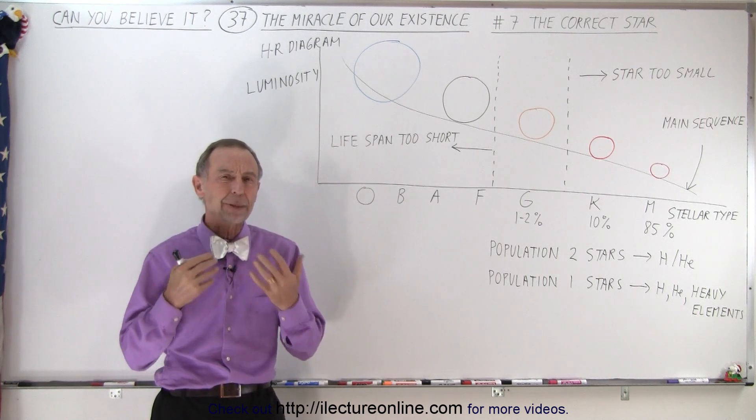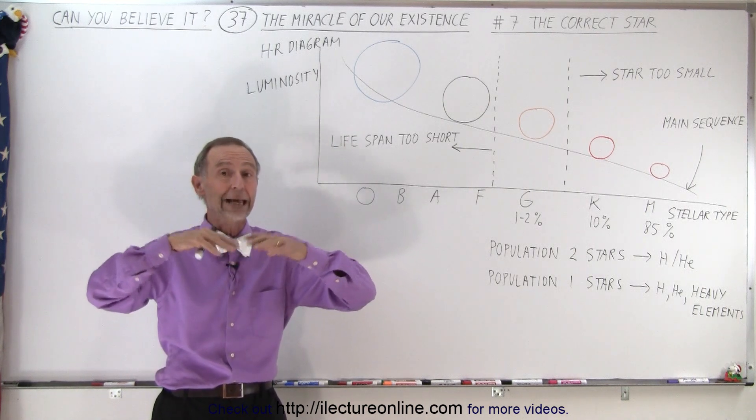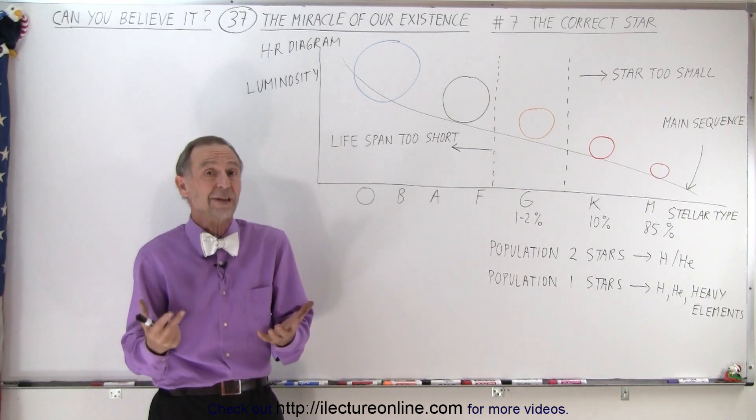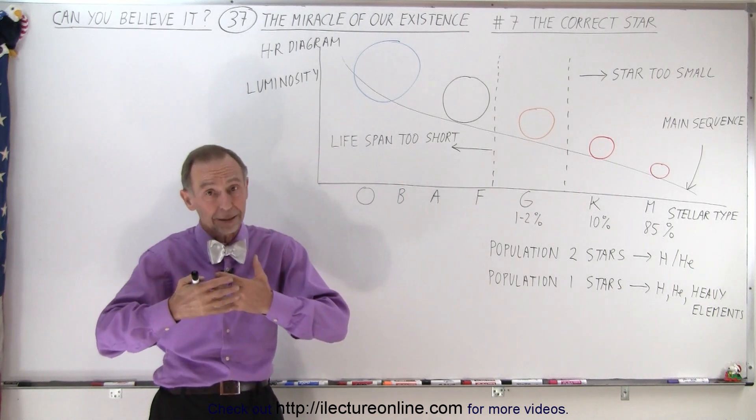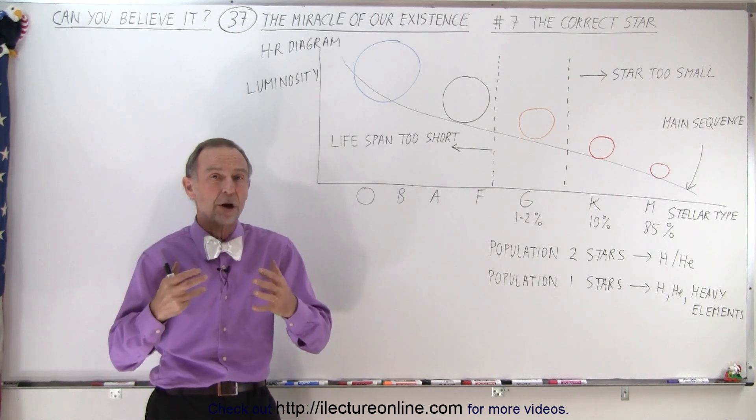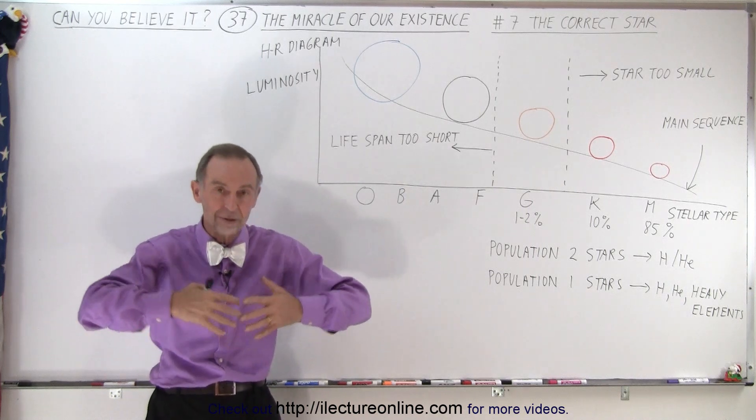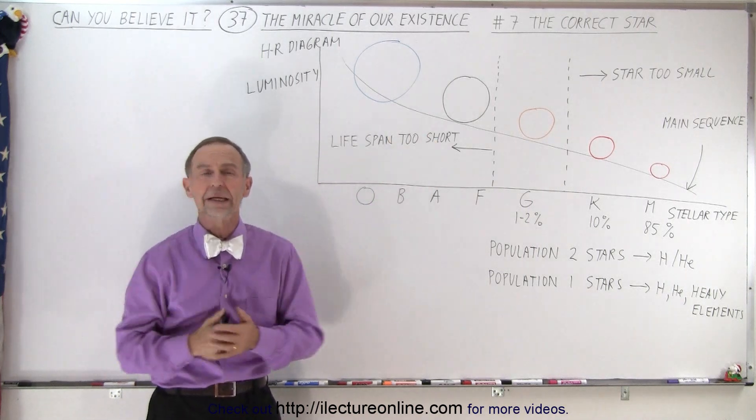And then you have to have a planet that is large enough to be able to hang on to its atmosphere. Because if it can't hang on to its atmosphere, then it would lose its atmosphere and that means that you cannot have liquid water surviving on the surface. It will simply evaporate and disappear into space.